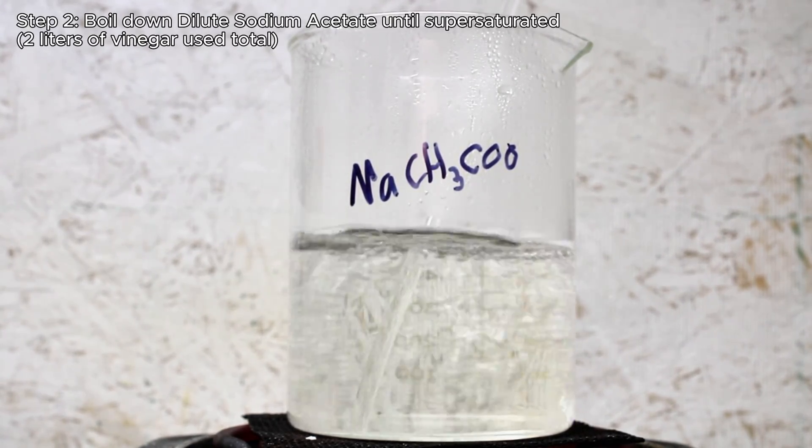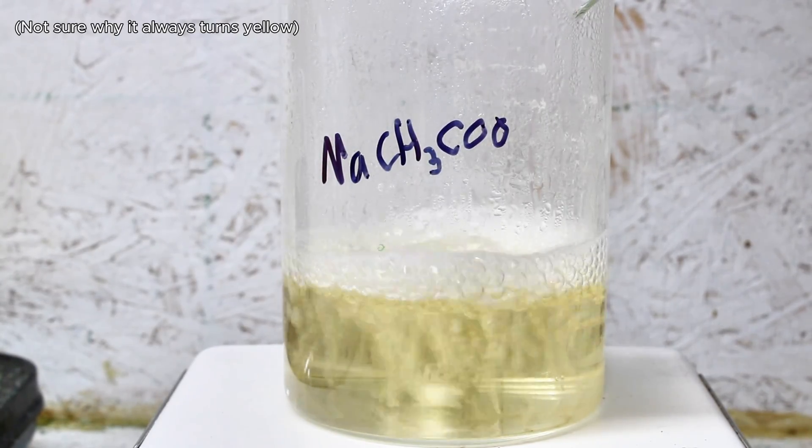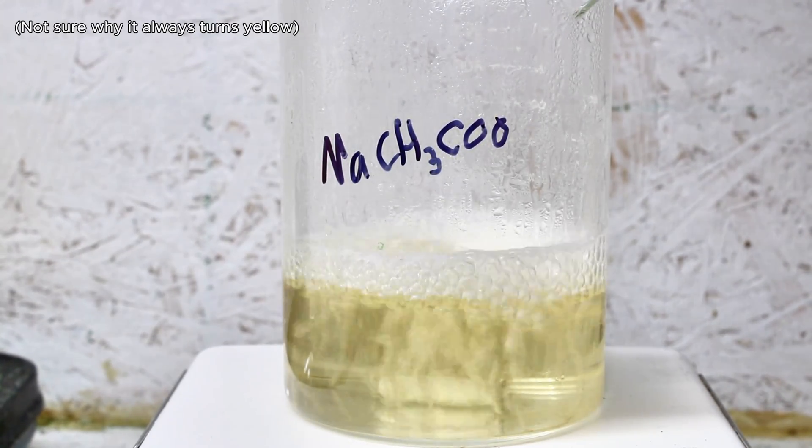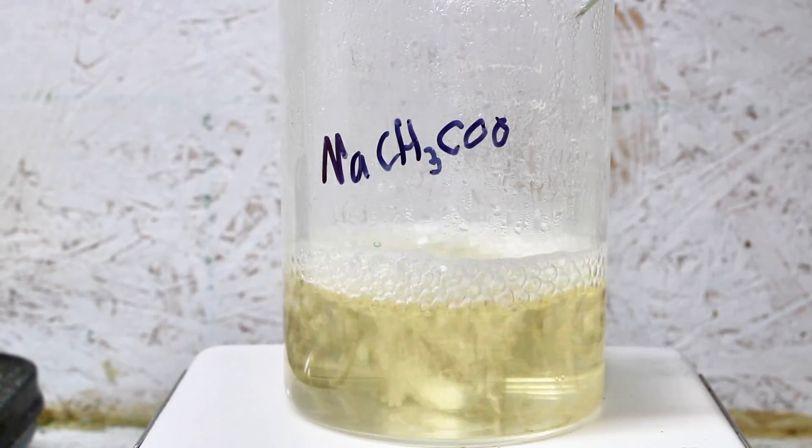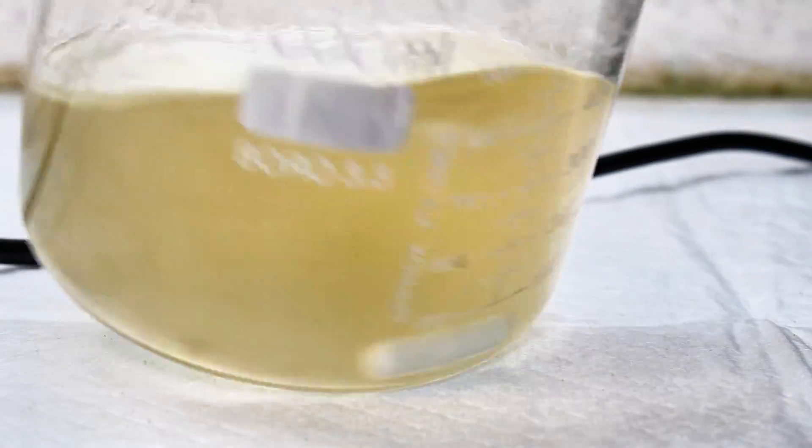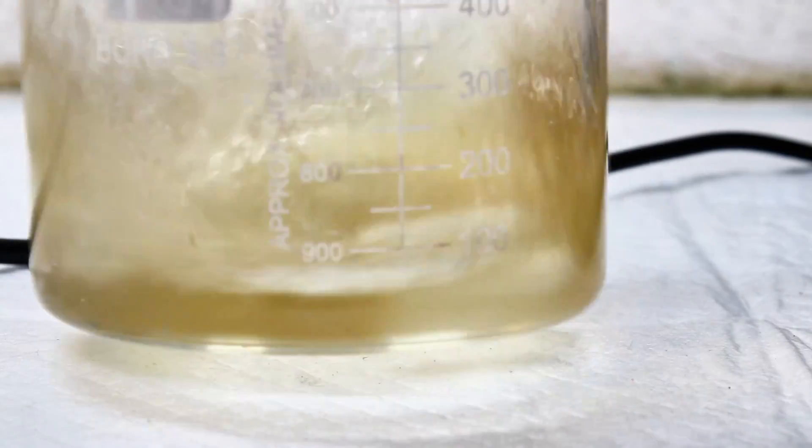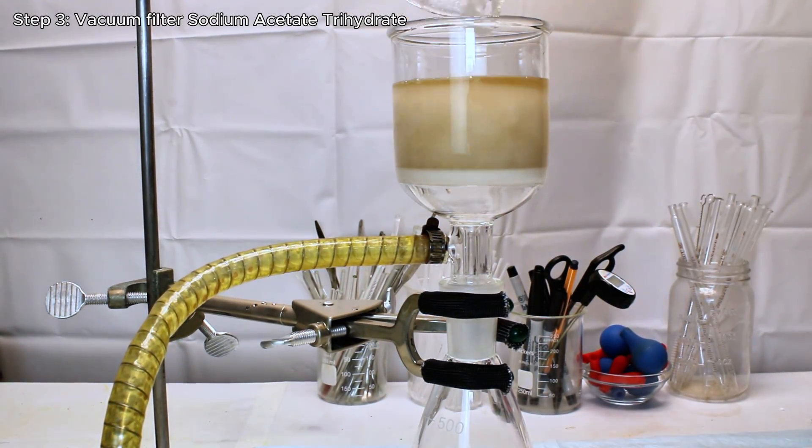For the next step, I go ahead and boil down my very dilute solution of sodium acetate to around a tenth of its initial volume, at which point a slight film will begin to form on its surface. This is a supersaturated solution of sodium acetate, and if you wanted you could cool this down and nucleate a rapid crystallization which can look pretty cool. In my case here, I decided to simply add a bit of acetone to help jumpstart the crystallization.